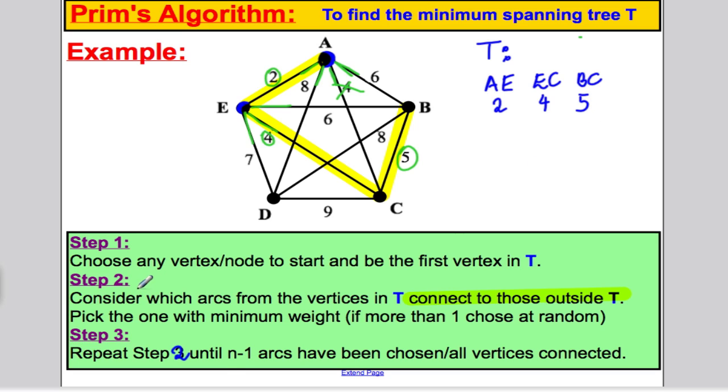Then I go back to step 2 because all the vertices haven't been connected. D is still not connected. I consider every arc that would connect from T to outside. This one wouldn't because A would connect to B which is already in the tree. E to D would be fine. D to C would be fine. B to D would be fine. What's smaller out of 8, 7, and 9? The 7 is. So I'm going to include ED in my spanning tree. The last thing I include is ED, which has weight 7.